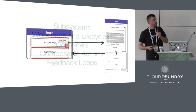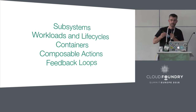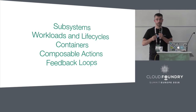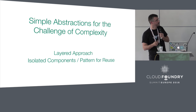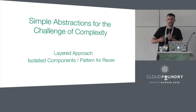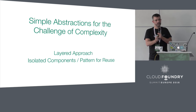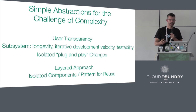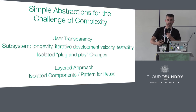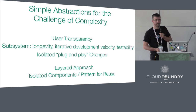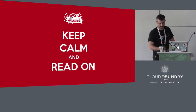So that's a whistle-stop tour through the abstractions. We've talked about subsystems, workloads and lifecycles, container abstractions, composable actions, and feedback loops. These are Diego's abstractions for dealing with the challenge of complexity. Diego has a layered approach that allows each component to work in isolation and affords a pattern of reuse. Ultimately that gives you better user transparency, and with each subsystem — whether Diego with respect to Cloud Foundry, or the subsystems within Diego — you get iterative development, development velocity, better testability, and plug-and-play capability. Thank you very much.